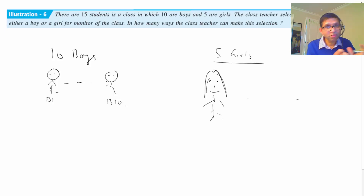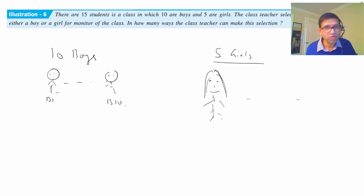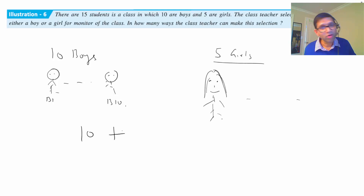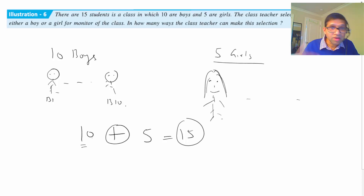The teacher has the following options: either she can make a boy the monitor, or she can make a girl the monitor - it's an OR relationship. If she decides to make a boy the monitor, there are 10 options since any one of the 10 boys can be chosen. If she decides to choose from girls, she has 5 options. So we add them: 10 plus 5 equals 15 total options.